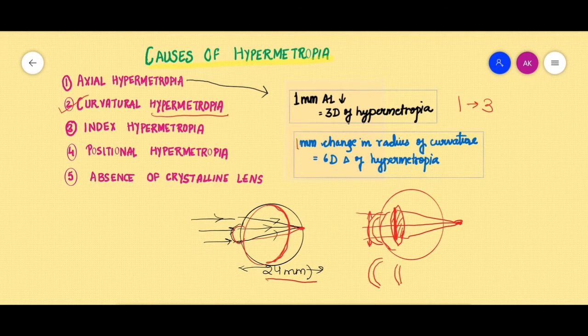1 mm change in the radius of curvature will give rise to 6 diopters of hypermetropia. So for the axial cause of hypermetropia we have to remember the rule of 1 is to 3, and for the curvature hypermetropia we have to remember the rule of 1 is to 6.